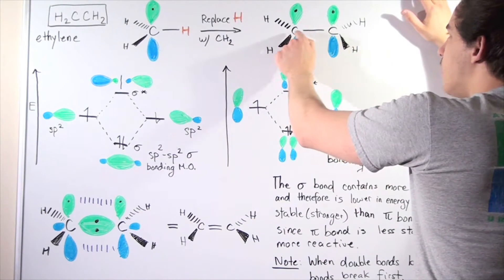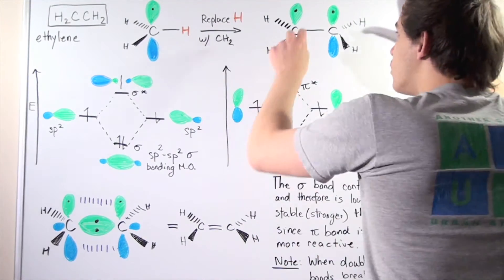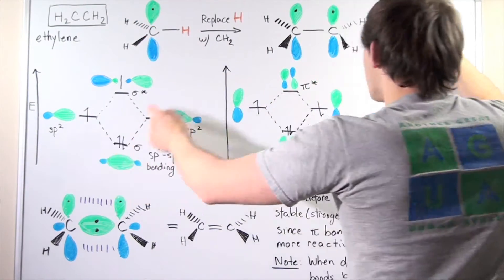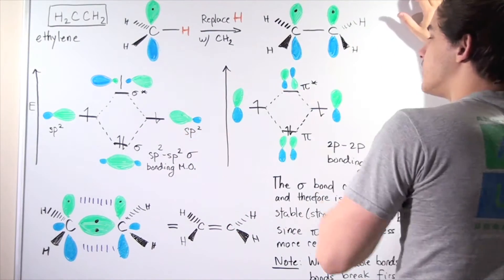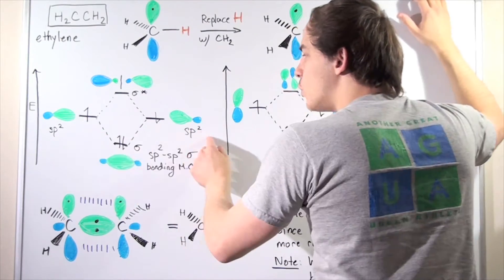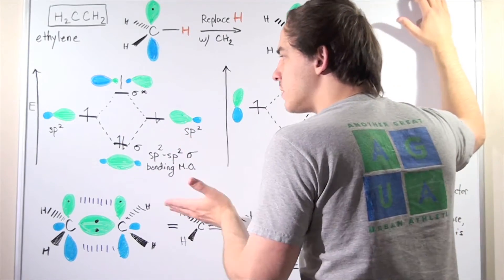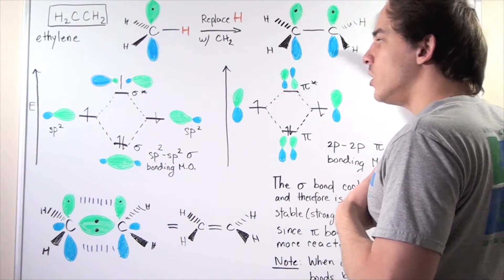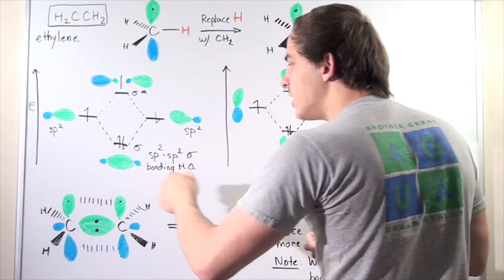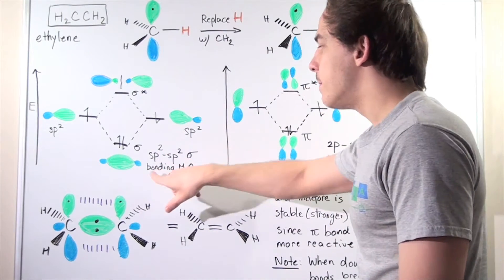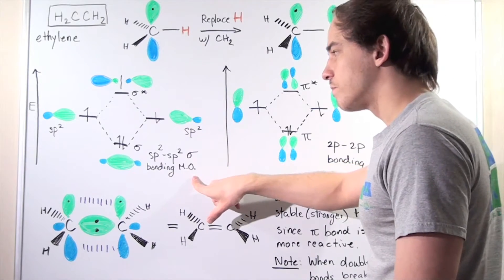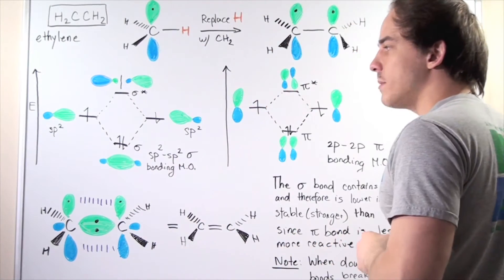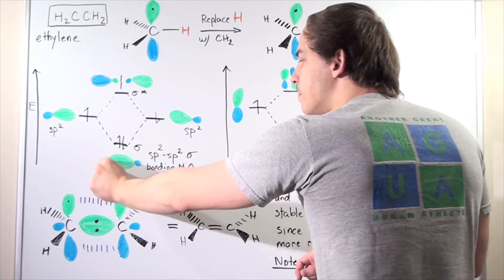Let's examine what type of bond this carbon-carbon bond is. This carbon donates an sp2 hybridized orbital, and this carbon also donates an sp2 hybridized orbital. When we combine two atomic orbitals, we must form two molecular orbitals according to quantum mechanics. The lower-energy, more stable molecular orbital results from the overlap of these sp2 orbitals — giving us an sp2-sp2 sigma bonding molecular orbital. The two electrons go into this lower-energy bonding MO.